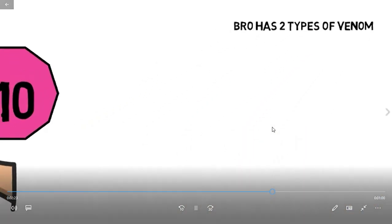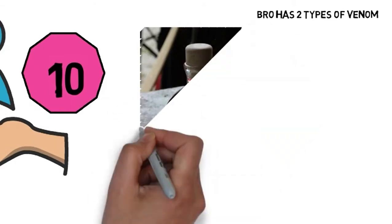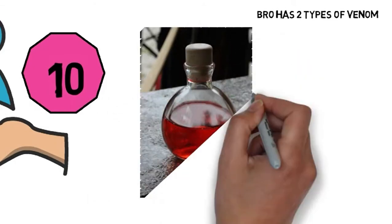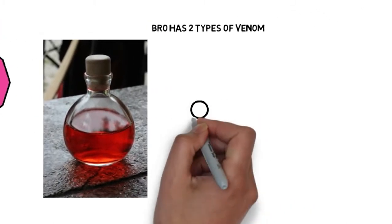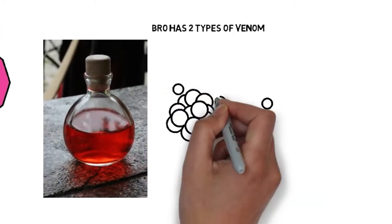Next is blue ringed octopus have two types of venom. So there's two types of venom in here, which makes this animal super deadly.